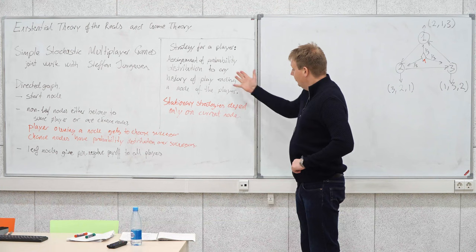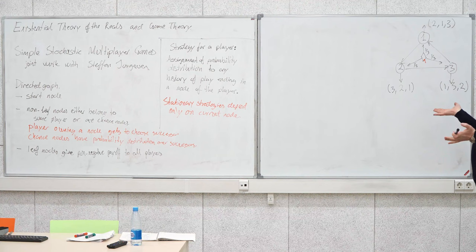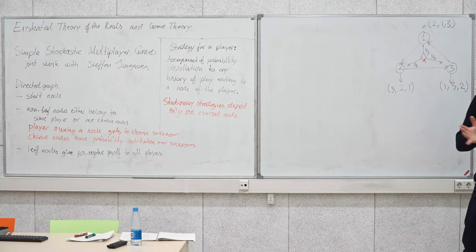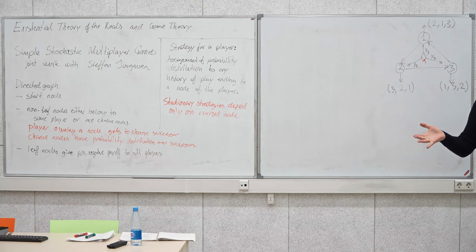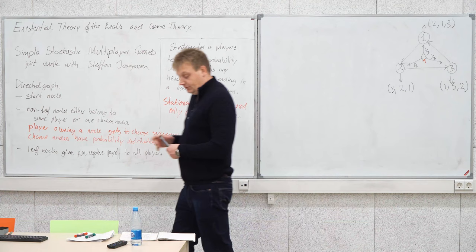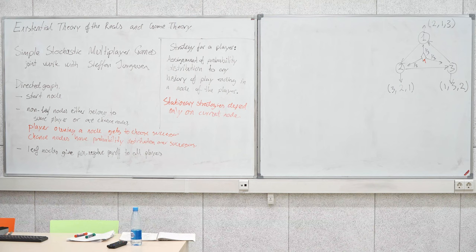The solution concept we're interested in is Nash equilibrium. Once we fix a strategy profile, we get the payoffs of each player — the expected payoff at a terminal node when it is reached. Infinite play is also possible; in that case all players receive payoff zero. Nash equilibrium is a strategy profile where no player has any incentive to unilaterally change to a different strategy.